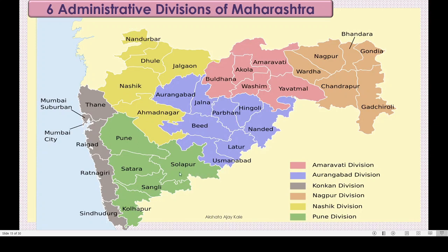The last one is Pune division, shown in green, which includes Kolhapur, Sangli, Satara, Pune, and Solapur - these five districts together make Pune division. To make administration easy, Maharashtra is divided into six administrative divisions.